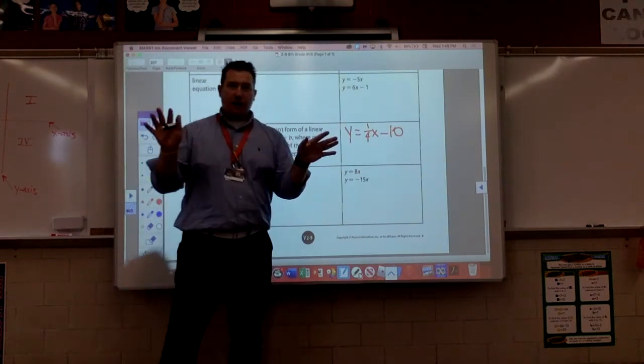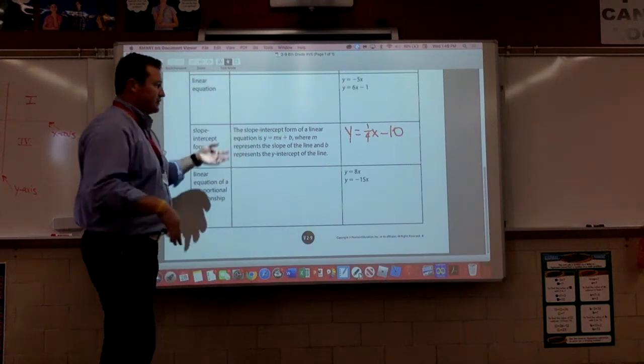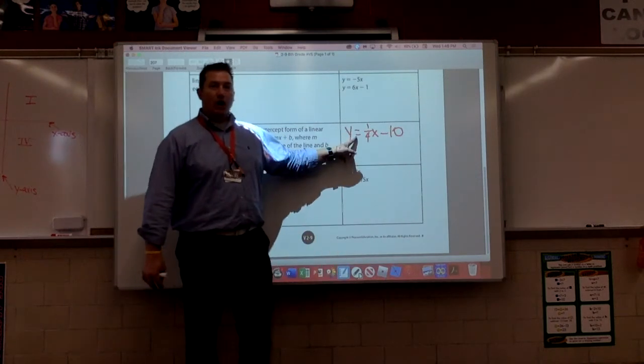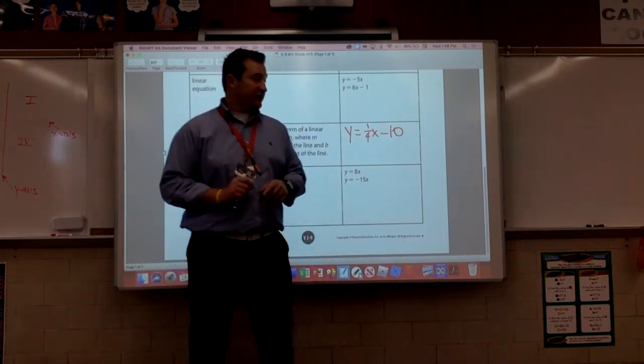There are other forms you don't have to worry about. We could do more examples, but I think you understand it. Again, folks, we've got to know one-fourth is the slope. Negative 10 is the y-intercept.